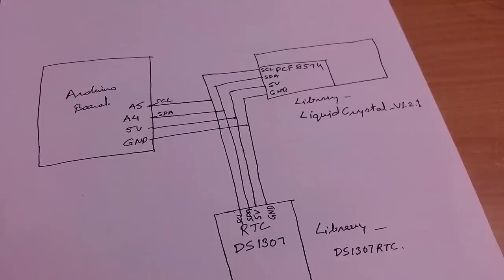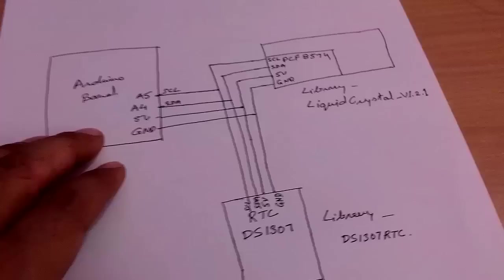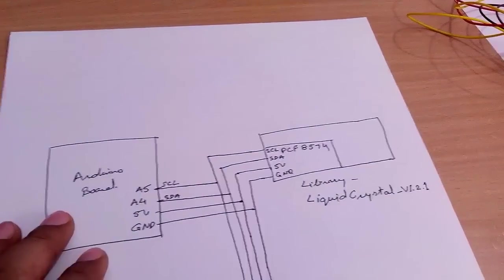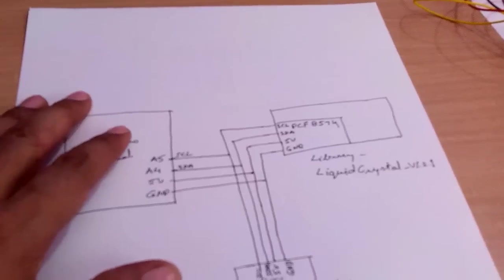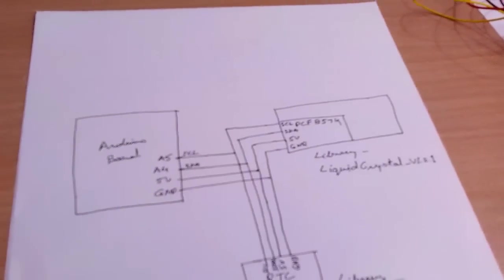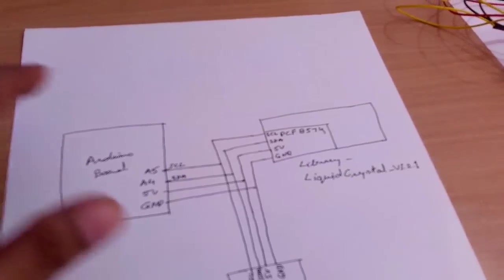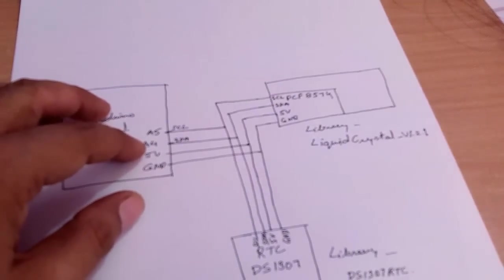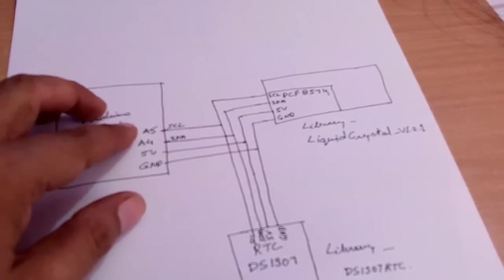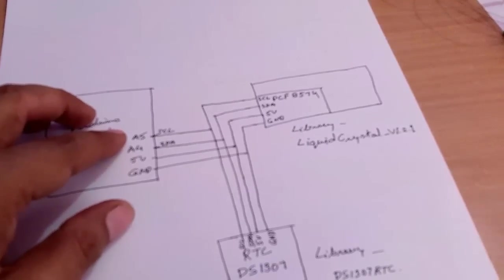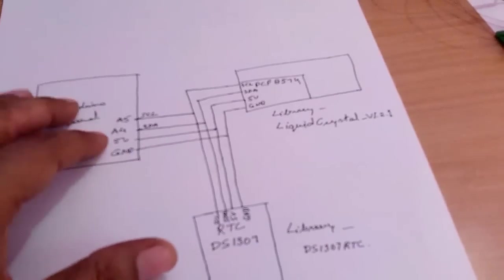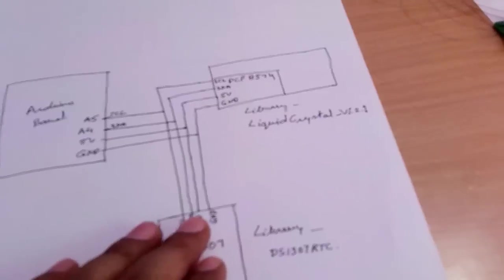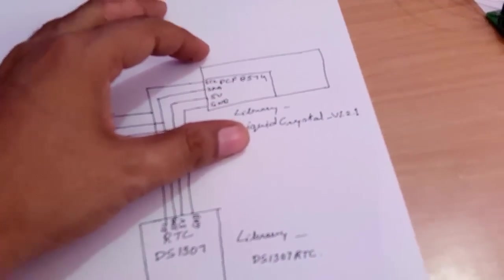This is a simple schematic showing how all three boards are connected. We are using only four pins of the Arduino board: 5 volt, ground, analog pin 4, and analog pin 5. Analog pin 4 is the data pin (SDA) for the I2C bus, and analog pin 5 is the clock pin (SCL) for the I2C bus. Both the RTC DS1307 and the 16x2 LCD display based on the PCF8574 chip are connected to these pins.